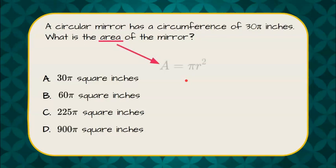First thing we want to do is identify that the formula for area is area equals pi r squared. We are going to find the radius, square it, and then we don't need to multiply by pi because each one of these answers are left in terms of pi.